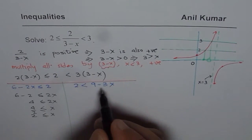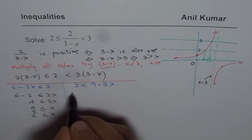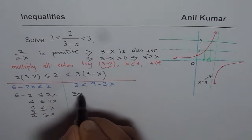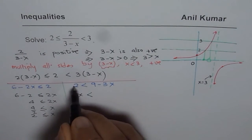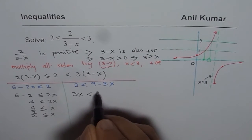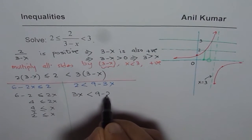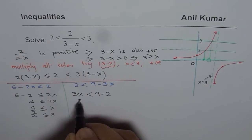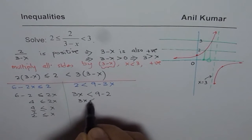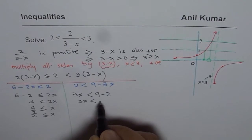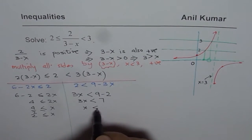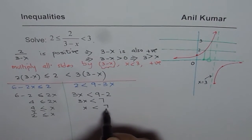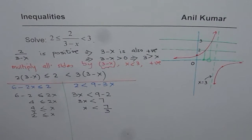Solving the right inequality 2 < 9 − 3x: bring 3x to the left side, giving 3x < 9 − 2, so 3x < 7, which means x < 7/3, or approximately x < 2.33.